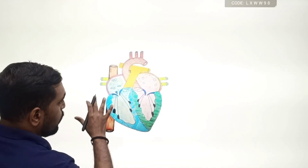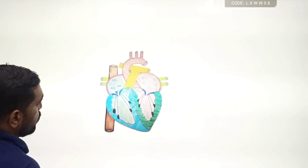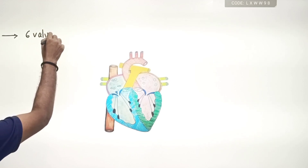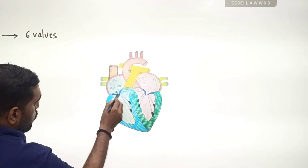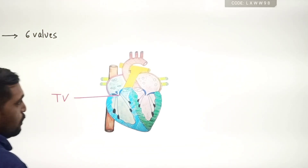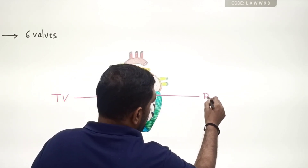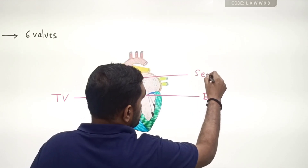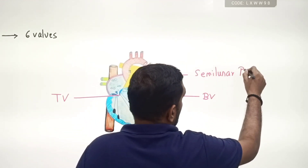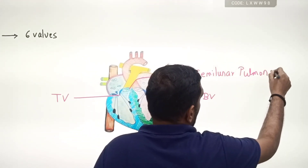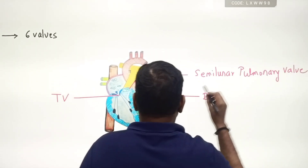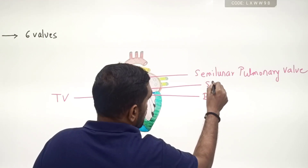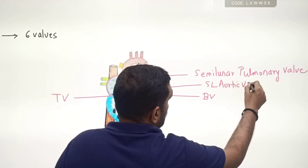Coming to the most important part, you have to remember all the types of valves present in the human heart. In total, there are six valves present in the human heart. On the right side, you have the tricuspid valve. On the left side, you have the bicuspid valve. The pulmonary artery has the semilunar pulmonary valve. The fourth valve is on the aorta, called the semilunar aortic valve.